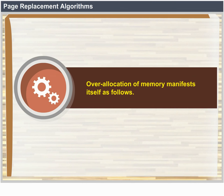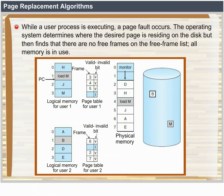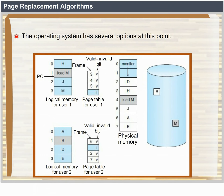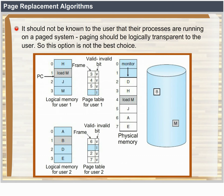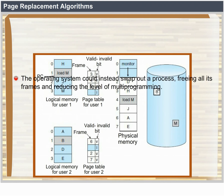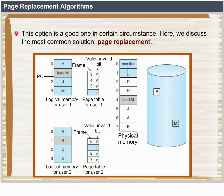Over-allocation of memory manifests itself as follows. While a user process is executing, a page fault occurs. The operating system determines where the desired page is on the disk but finds there are no free frames on the free frame list — all memory is in use. The operating system could terminate the user process, but demand paging should be logically transparent to the user. The operating system could instead swap out a process, freeing all its frames and reducing the level of multiprogramming. Here, we discuss the most common solution: page replacement.